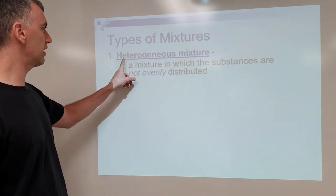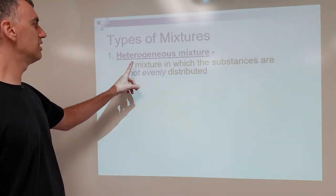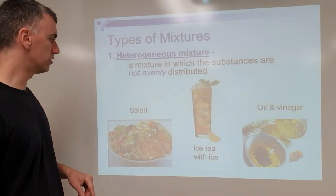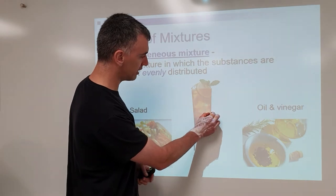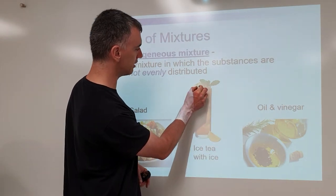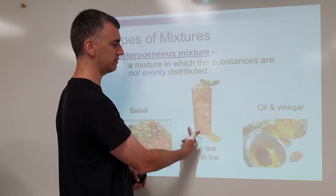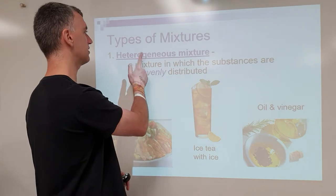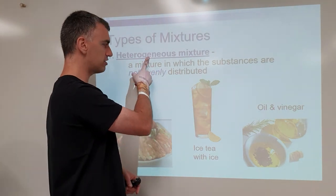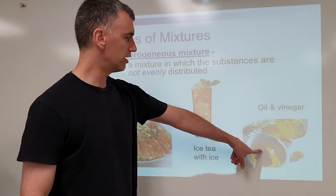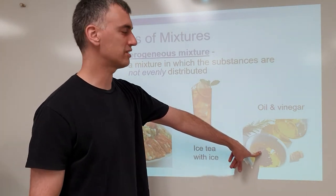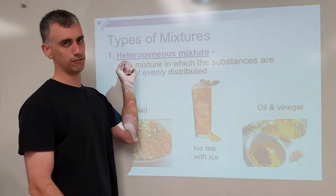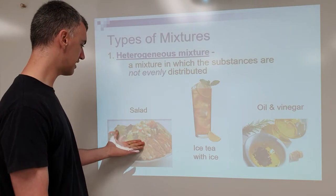There are two types of mixtures. Some mixtures are heterogeneous — 'hetero' means different — because they're not evenly mixed. Depending on where you look, you might see different things: here you see an ice cube, here you see tea, here you see lemon. That's a heterogeneous mixture. Put it in a blender and you'll have a much more homogenous mixture. Oil and vinegar is another example — even a blender won't fix that. The idea is they don't mix evenly, so depending on where you look, you see different things. A salad is the same — different stuff throughout.